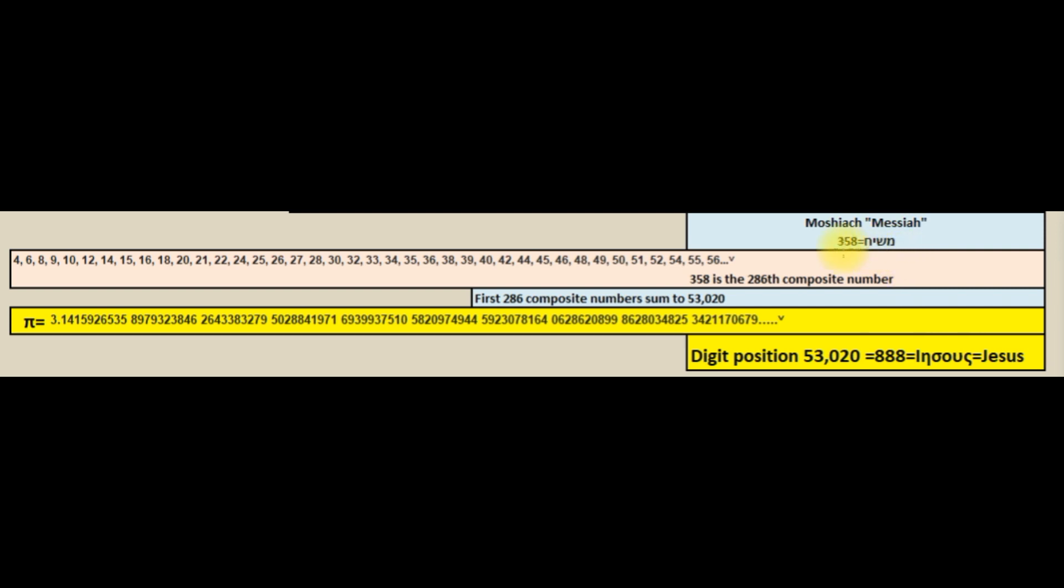In Hebrew, Moshiach, which means the Savior, the Anointed One, has a Hebrew gematria sum total letter value of 358. 358 is the 286th composite number.